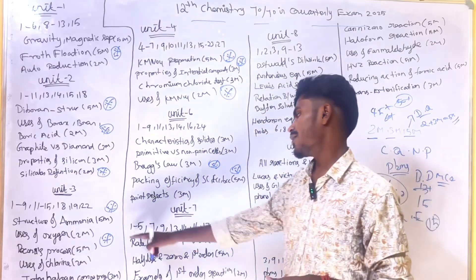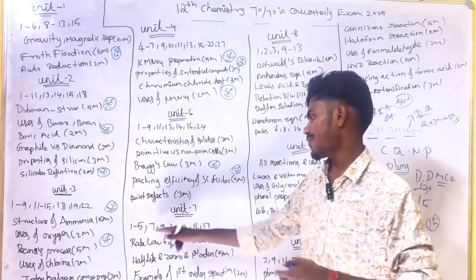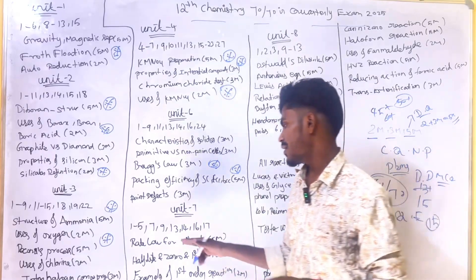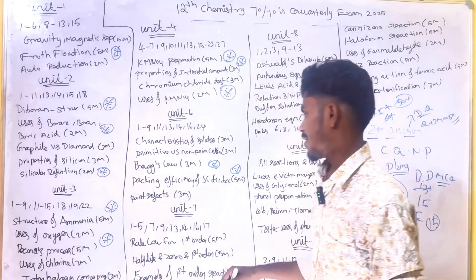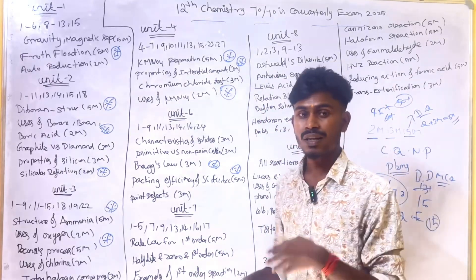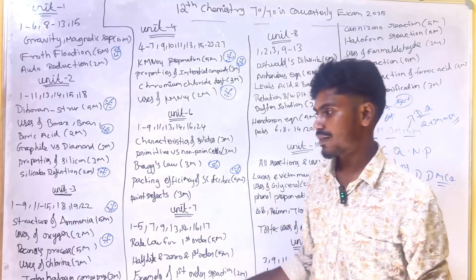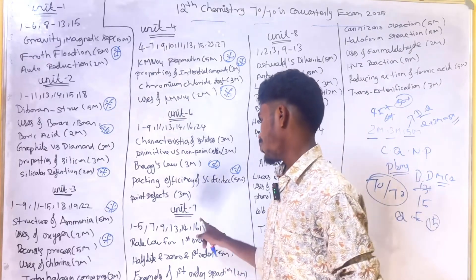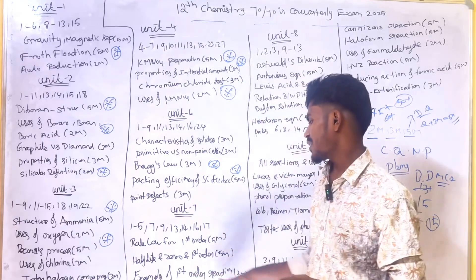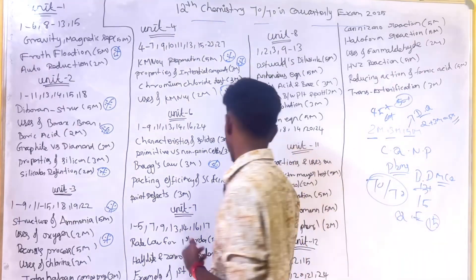Unit 7 — Chemical Kinetics: Questions 1, 2, 5, 7, 9, 13, 14, 16, and 17 are important. Rate equation for first order and zero order reactions, and half-life reactions are important. First order reaction is very important. Zero order reaction — 2 examples from the book back are important. Book inside first order reaction is also important.